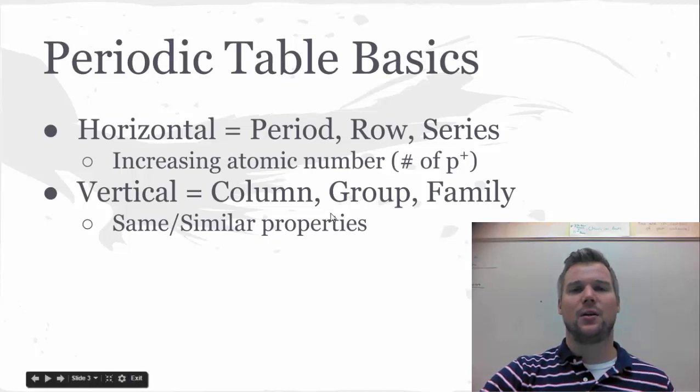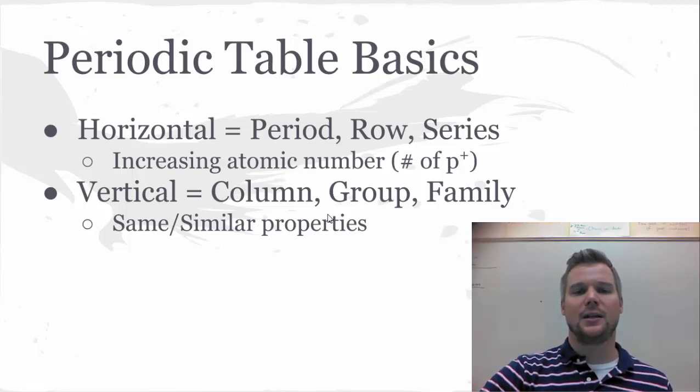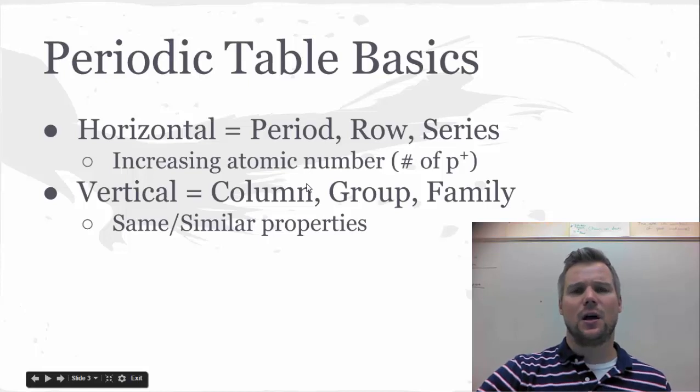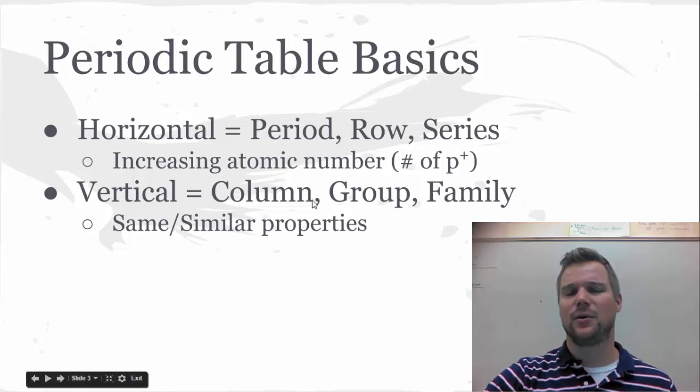We can talk about the horizontal arrangement of atoms on the periodic table. We call those horizontal arrangements periods, rows, or series. And these periods or rows are set up so that the atomic number increases as you go left to right. And in general, the atomic mass or mass number, average atomic mass also increases.